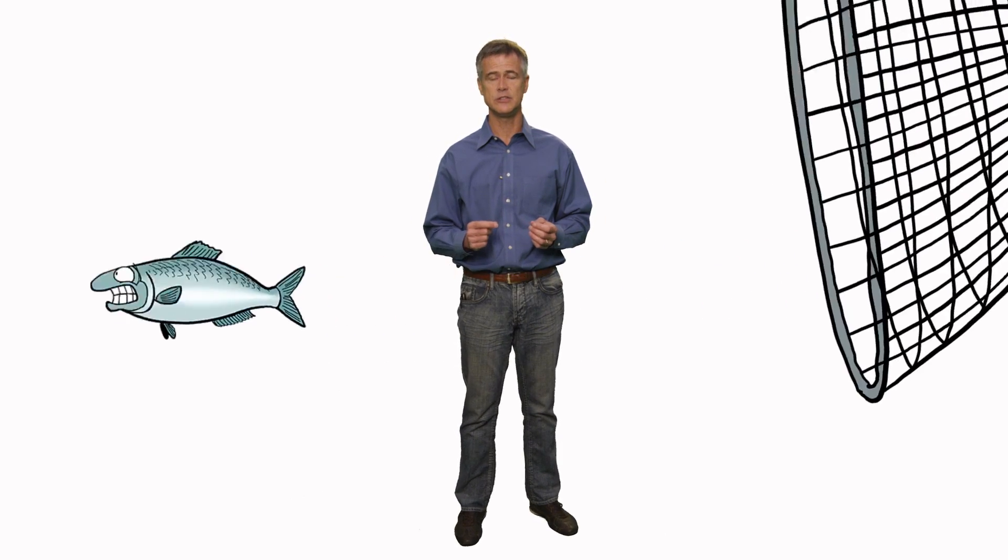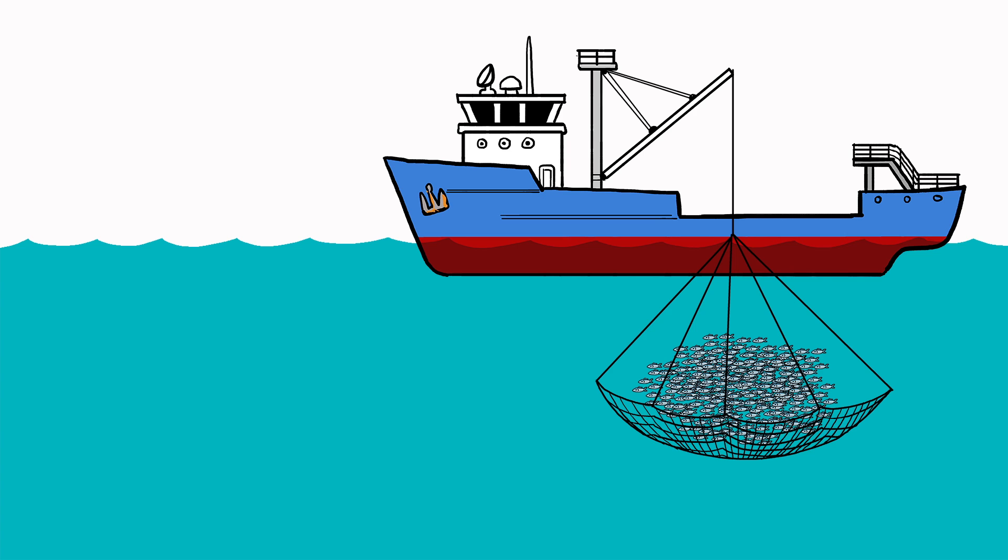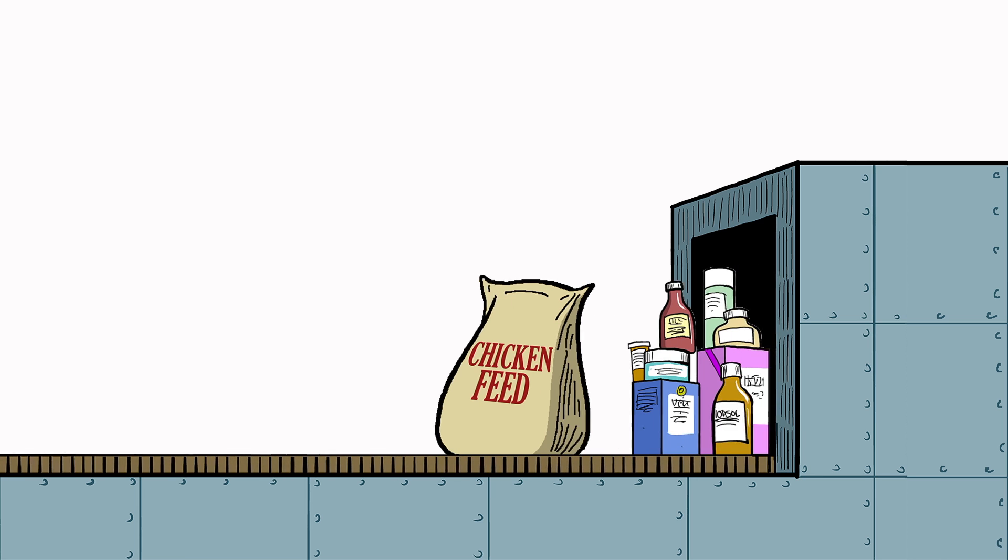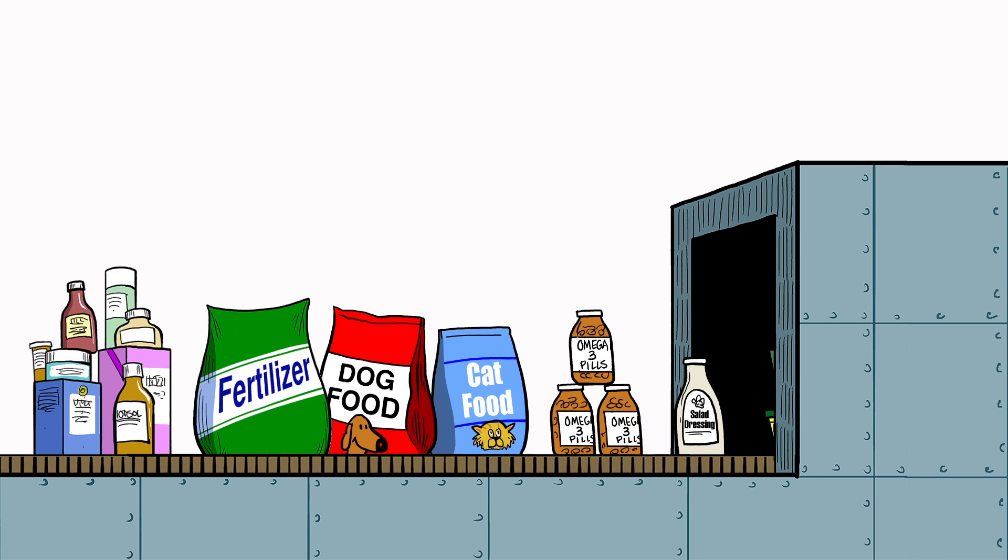And that's what could happen if we continue to fish these little guys at an unsustainable rate. Without adequate catch limits, industrial fishing boats can scoop up as many forage fish as they want, grind them up, and send them off to be used in animal feed, cosmetics, fertilizers, and other products.